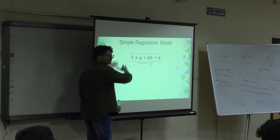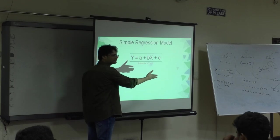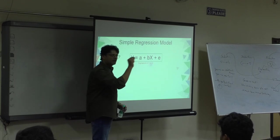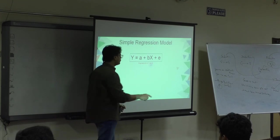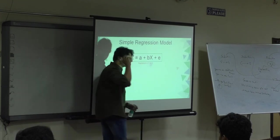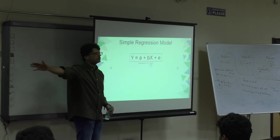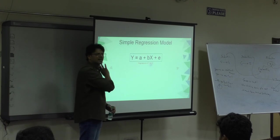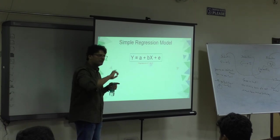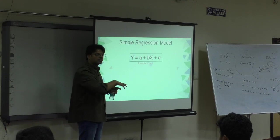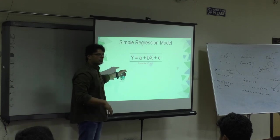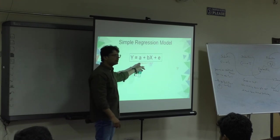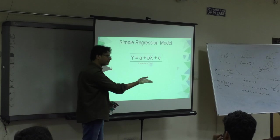We have certain observations based on which we calculate. We are not finding out the error for individual observations. We are finding out the error term for the total equation. Just keep this in mind. We will talk about this probably when we come to structural equation model. In regression you do not take in error terms with observation. You take only error terms on the whole.